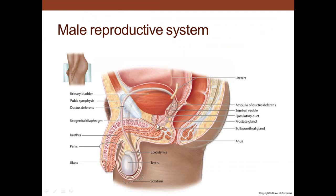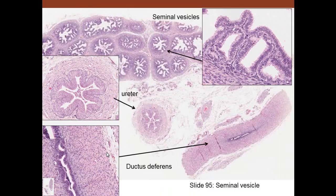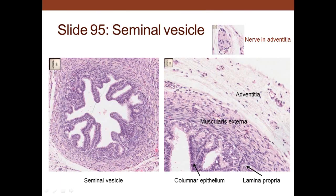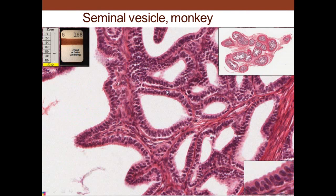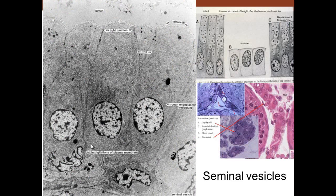In the male reproductive tract we have the seminal vesicles, the prostate, the ejaculatory duct, the urethra from the bladder, and then the penile urethra. The seminal vesicles have a honeycomb shape with simple columnar cells. In slide 95 you can also see the ureter and a longitudinal view of the ductus deferens. The seminal vesicle has a muscularis externa on the outside, columnar epithelium, lamina propria, and adventitial tissue. The cells show a lot of rough endoplasmic reticulum, and the height of these cells depends upon testosterone produced by the Leydig cells in the testis.